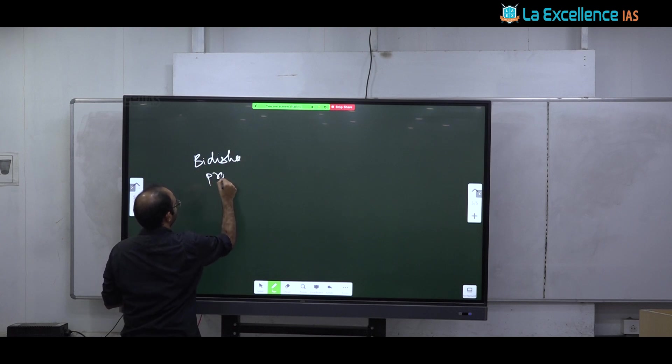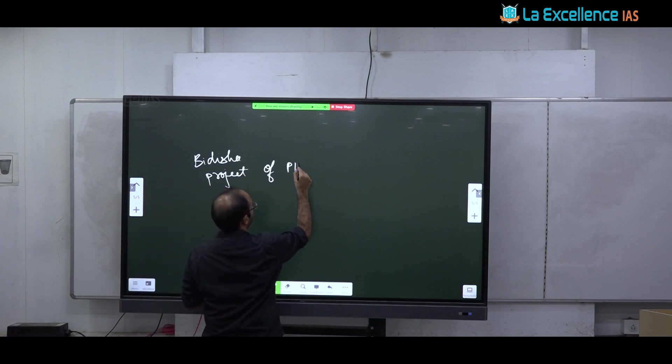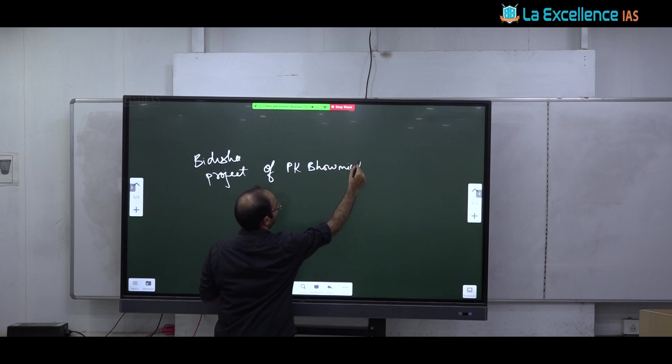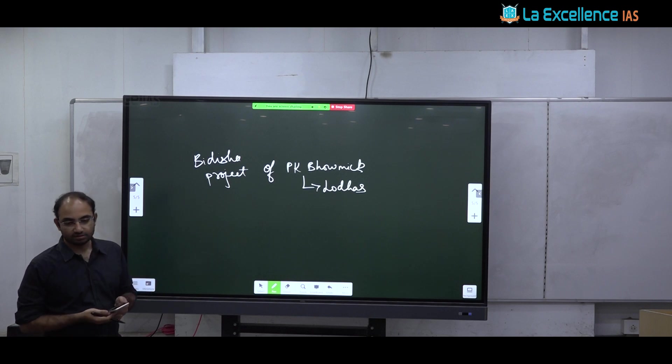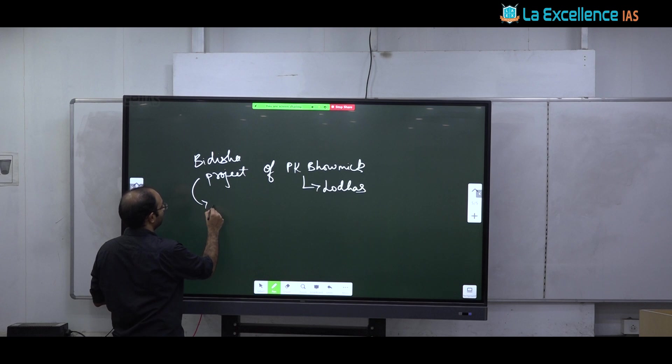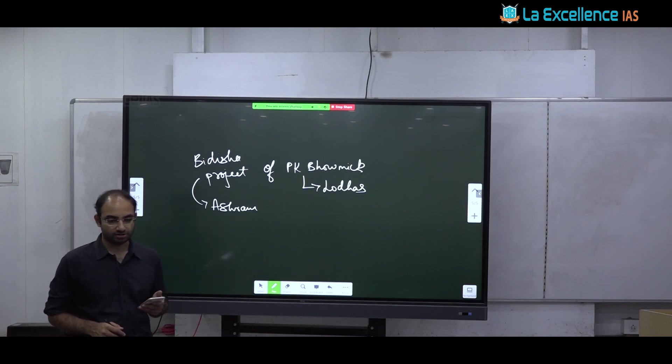But that is no longer viable. So you must provide them with alternate livelihood. That is all. And examples, name some communities who are denotified. Lodas are example. And there is one famous case study of how denotified tribes can be developed. It is called as Bidisha project. Bidisha project is a project taken by P.K. Baumik, an anthropologist.